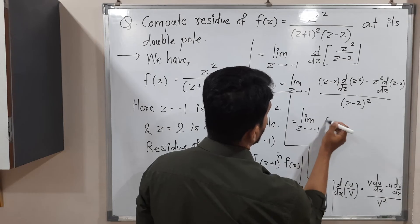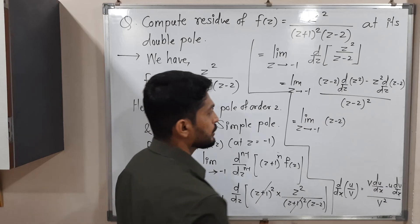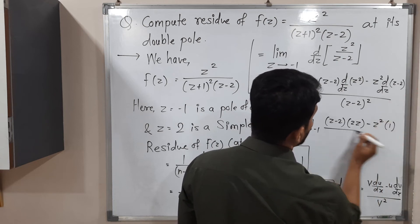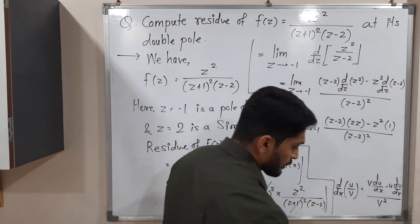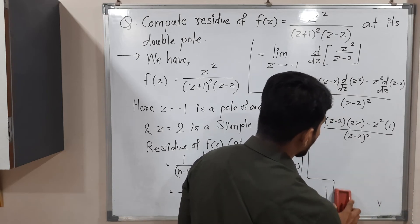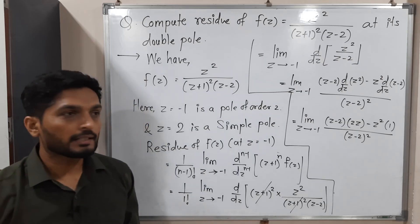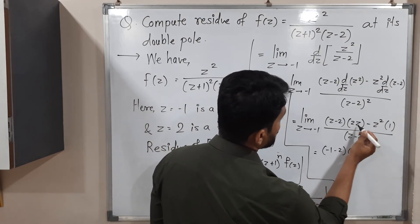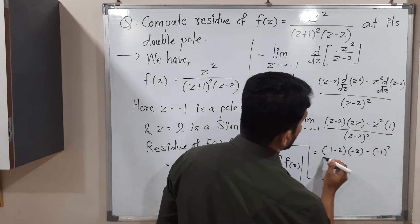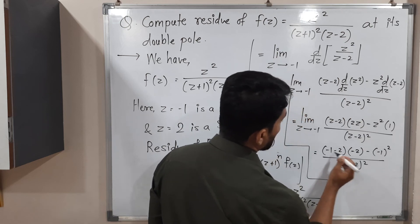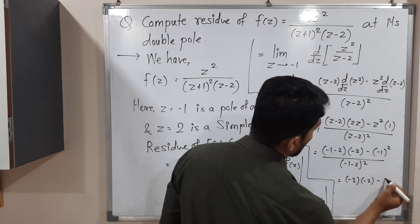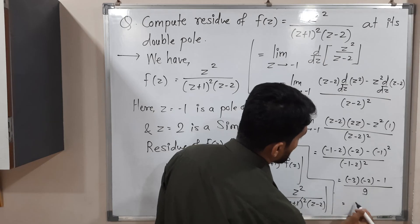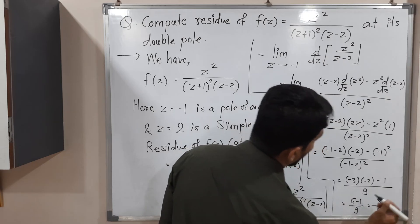Now we apply the limit by putting z = -1 everywhere. We get [(-1-2)·(2×-1) - (-1)²] / (-1-2)². That is [(-3)·(-2) - 1] / (-3)², which is [6 - 1] / 9 = 5/9. So the residue at z = -1 is 5/9.